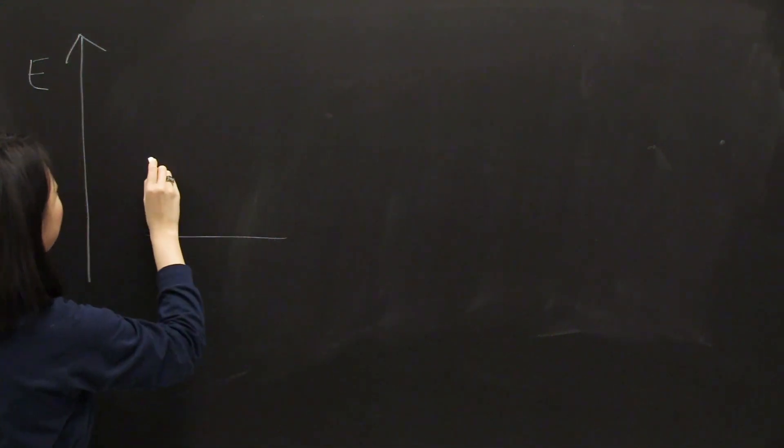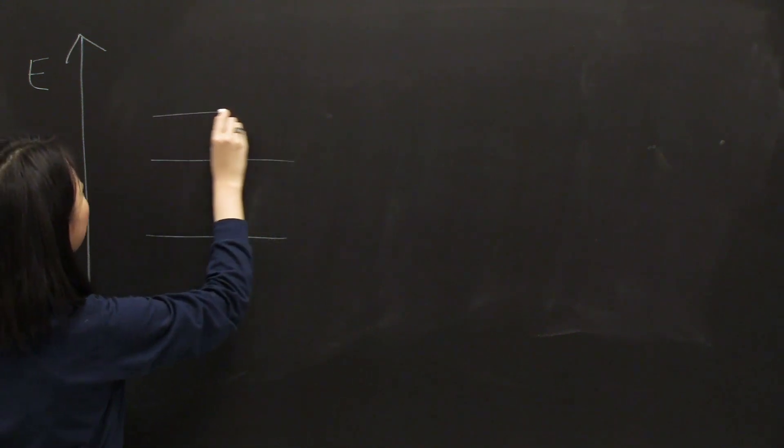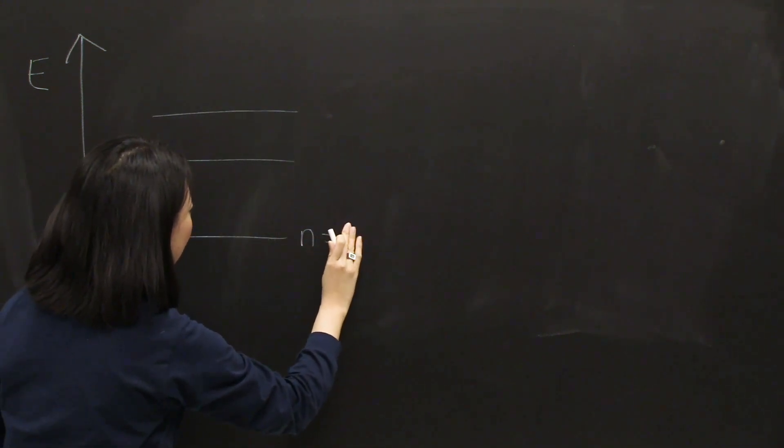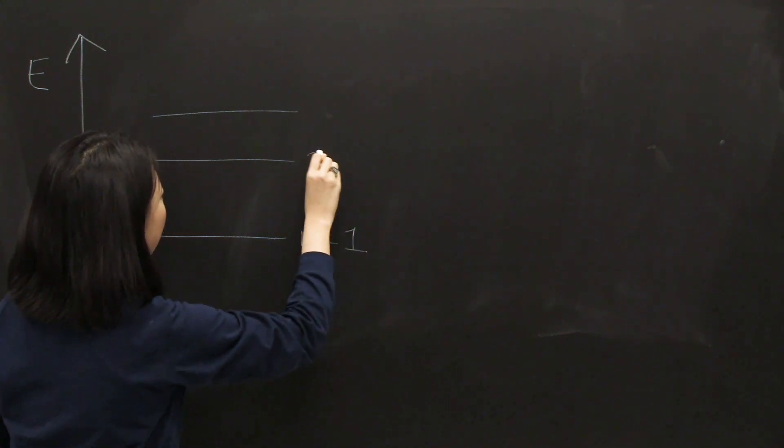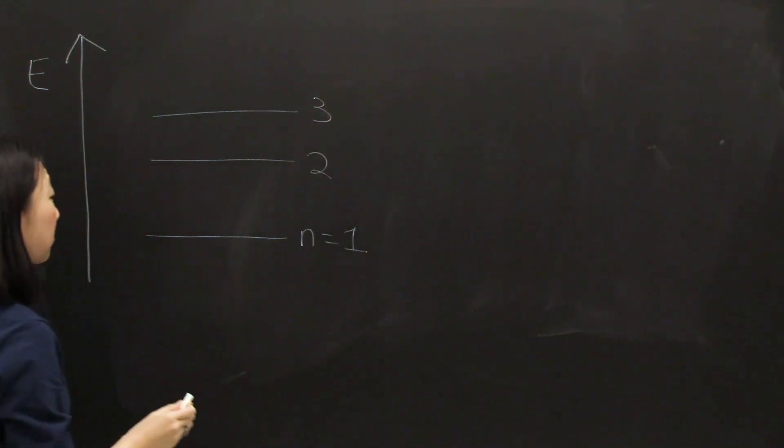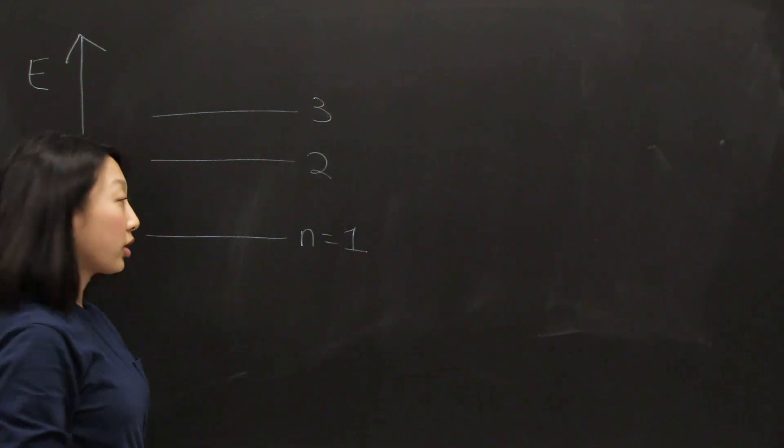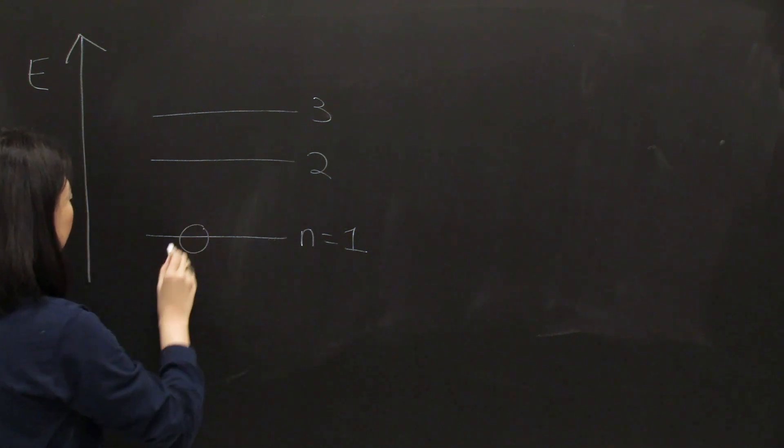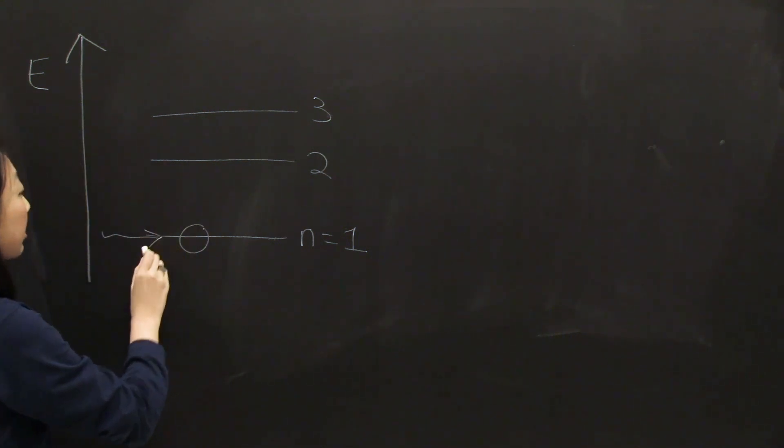And three different energy levels that my electron can hop into. So this is one, two, and three.